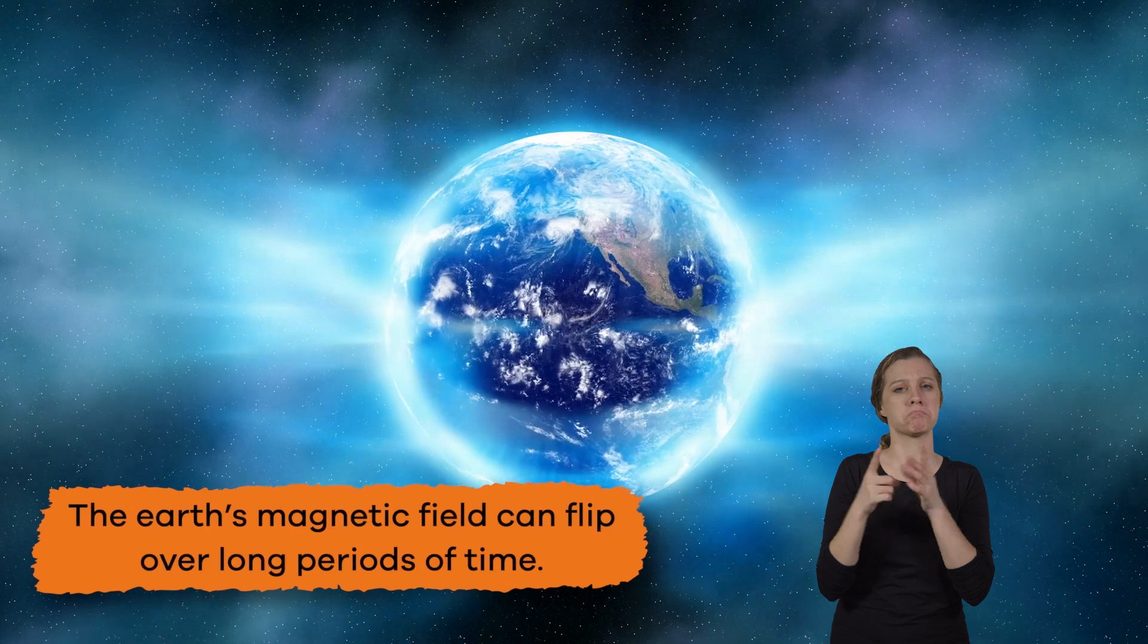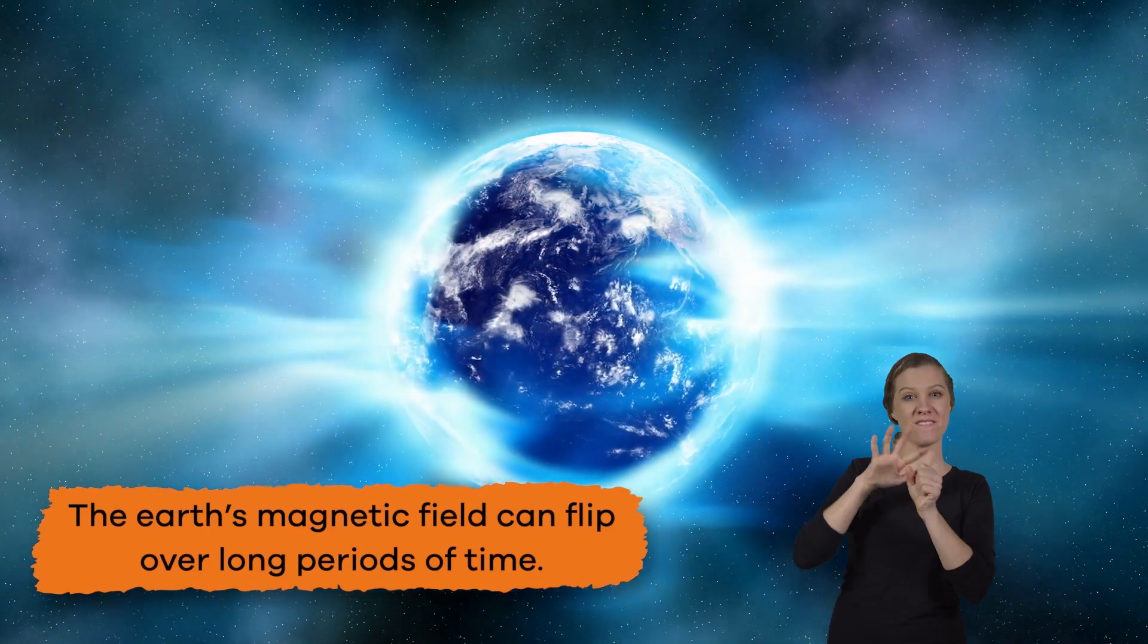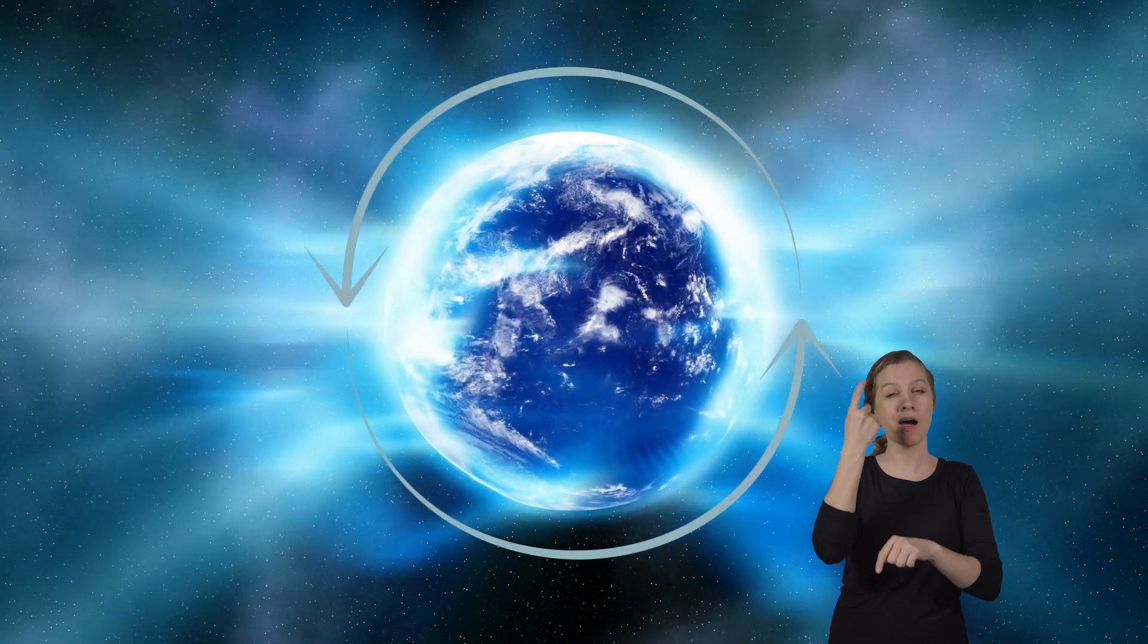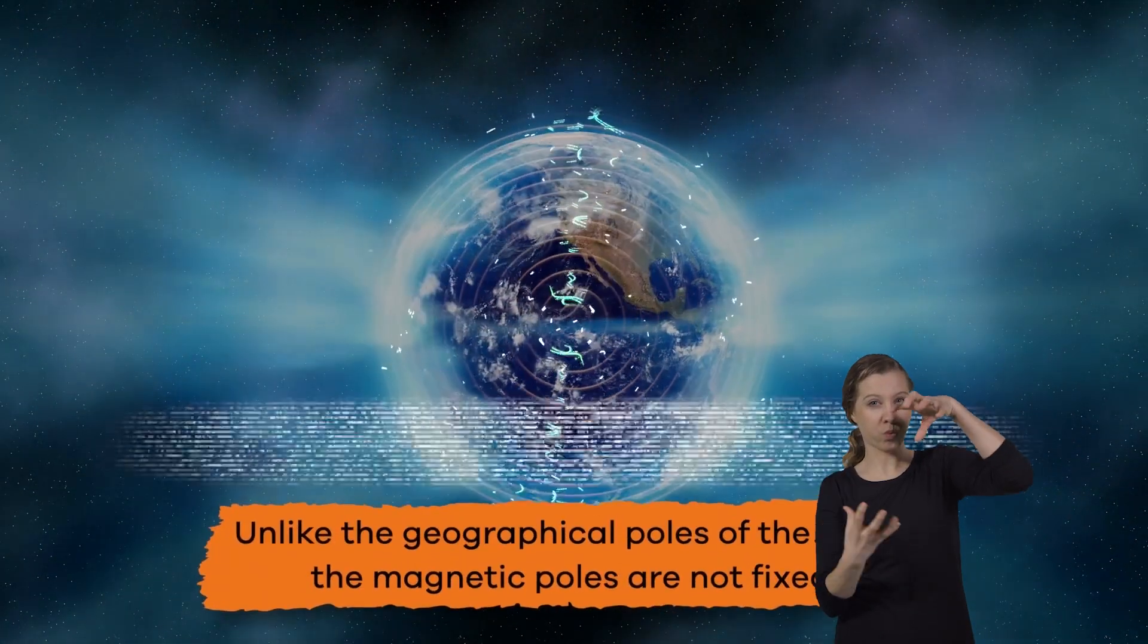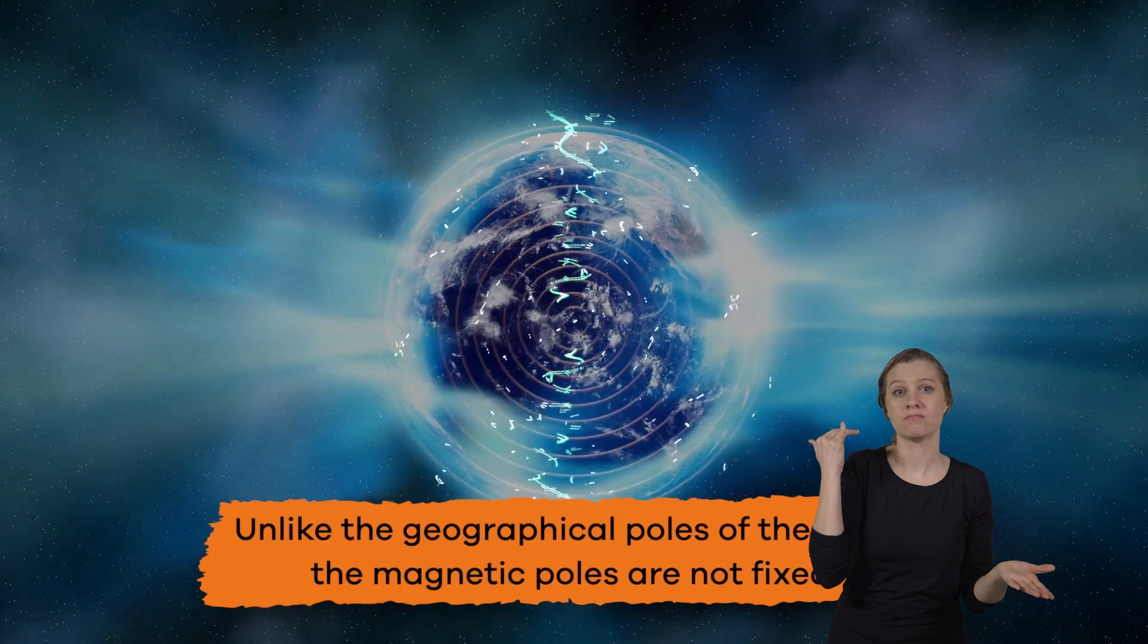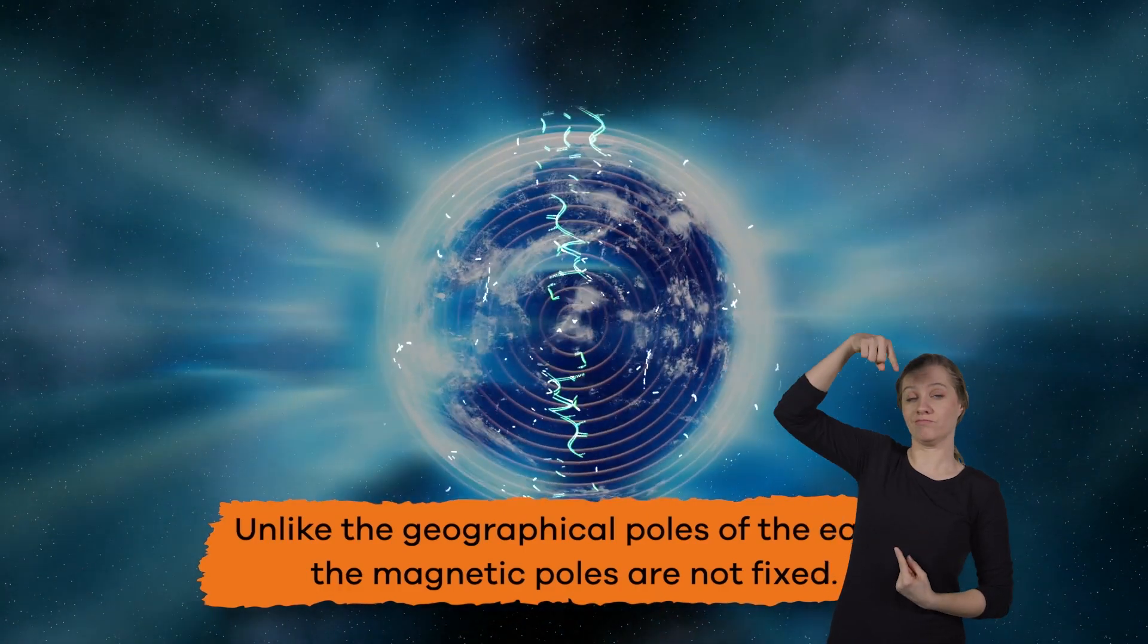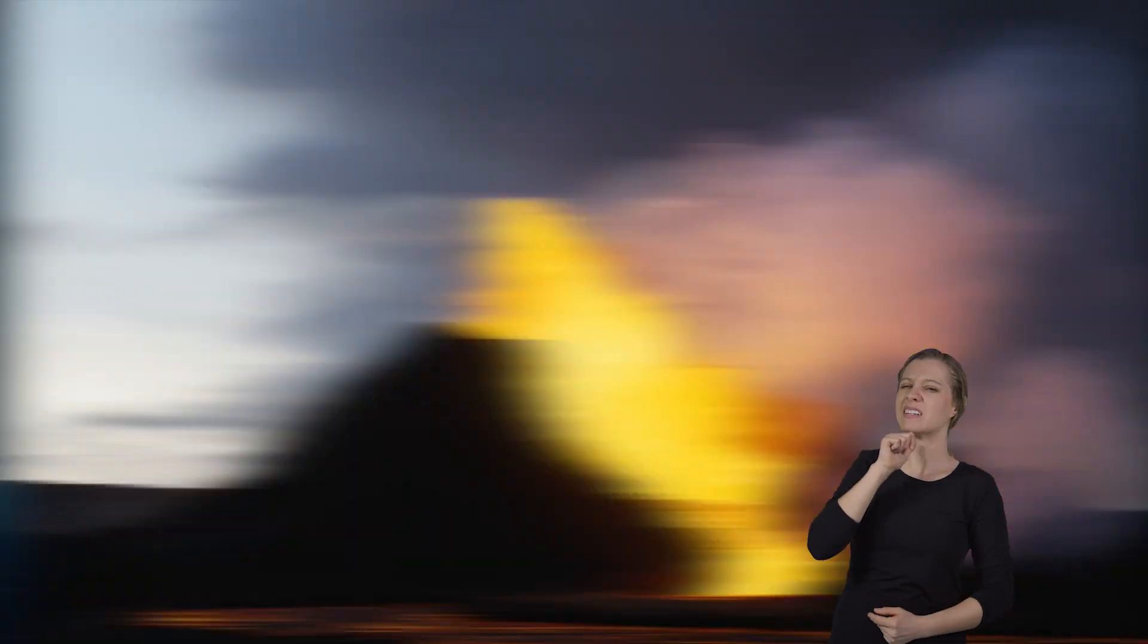With the north and the south magnetic poles switching places, this happens because unlike the geographical poles of the earth, the magnetic poles are not fixed. But this process occurs over hundreds of thousands of years.